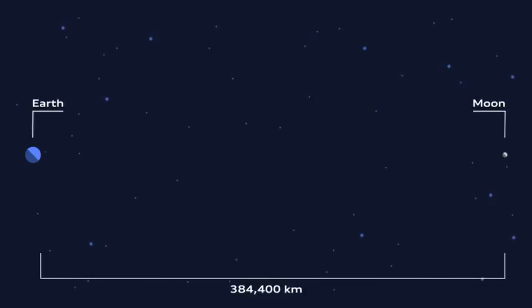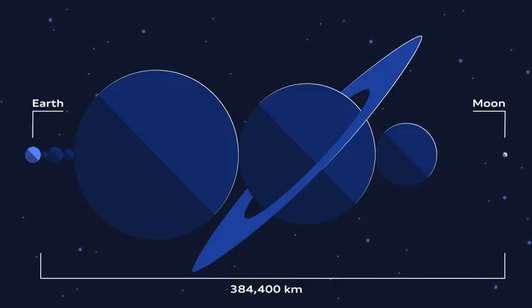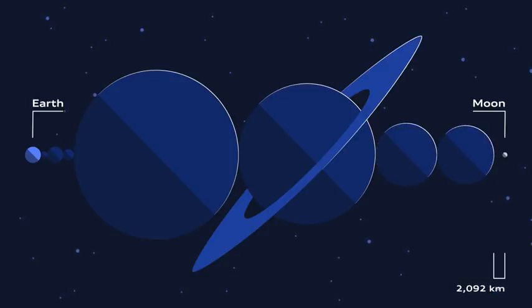While the moon is often portrayed as being fairly close to Earth, it is in fact around 384,400 kilometers away. That's enough space to fit every other planet in the solar system between Earth and the moon.